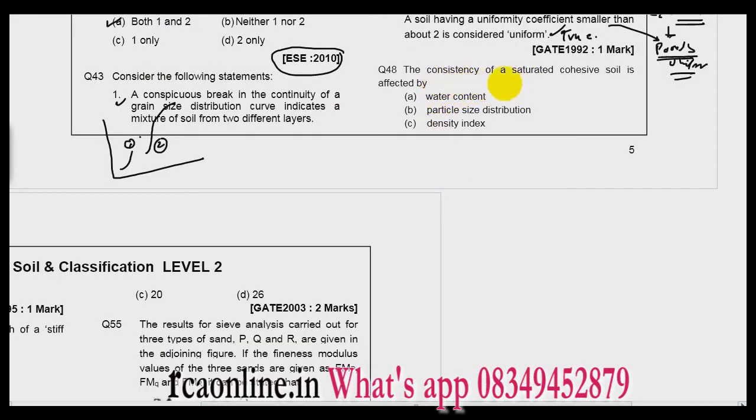So the consistency of a saturated cohesive soil is affected by. This is actually level 1 question, it is not a level 2 question. So it is very simple. Consistency means what? This is our curve. So the consistency depends only on water content, so A is the right answer.